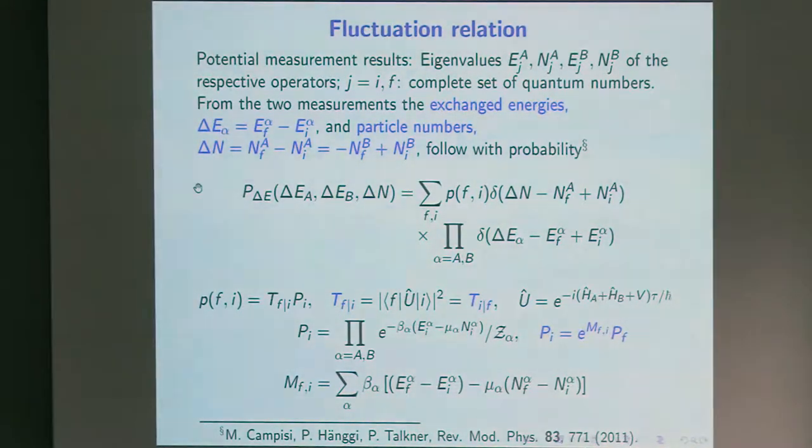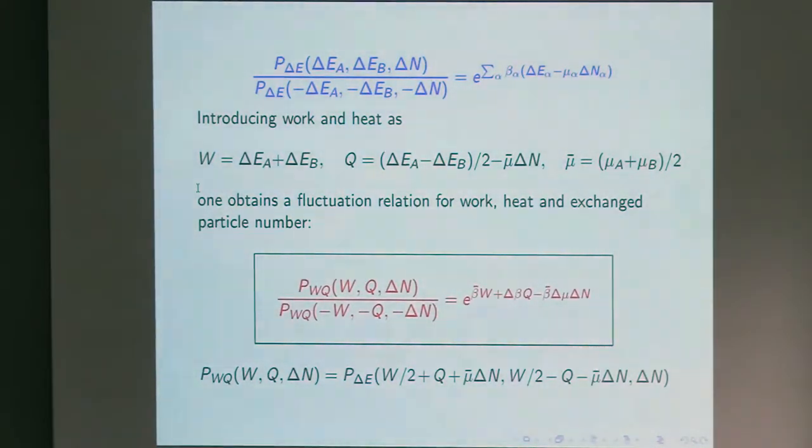Important for the following is that this transition probability is symmetric. That's a consequence of the unitarity and also of the fact that this protocol is completely time reversal. Therefore, this is symmetric. And moreover, the initial conditions, P I, which are given by these Boltzmann factors here, are related to the final conditions in terms of this matrix M, which can be written in this way. And these two blue equations have as a consequence a fluctuation theorem which tells me that the probability of finding delta E A, delta EB, and delta N relative to the respective negative values of these quantities here is given by this exponential factor here, which contains beta, beta alpha is the inverse temperature of system alpha, and so on.